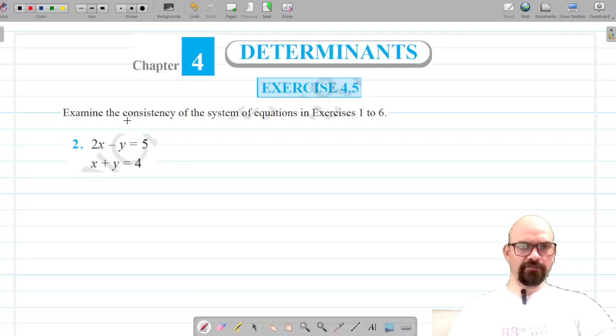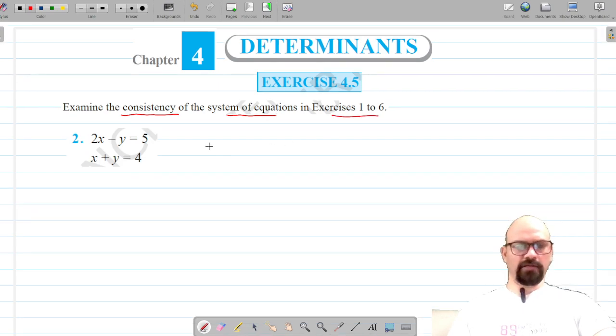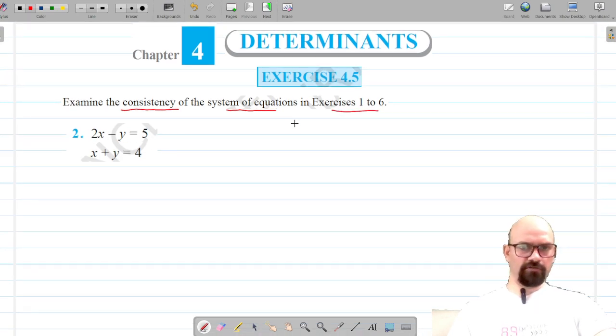Okay, we have to once again examine the consistency of the system of equations for question number 1 to 6. So once again, we are going to write this pair of linear equations in the form Ax equals b, where matrix A contains the coefficients of x and y.